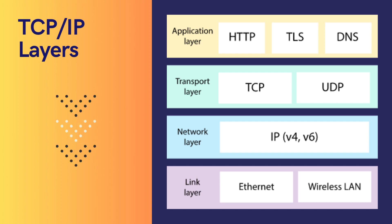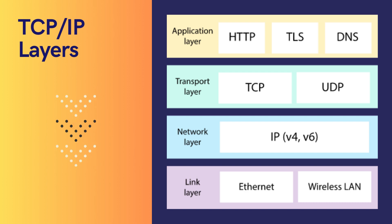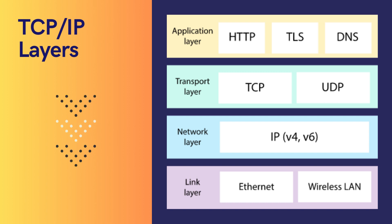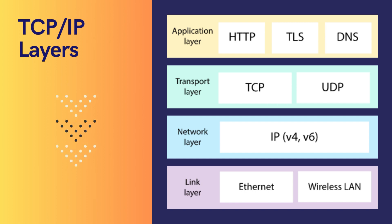You need to remember the order because some previous exam papers have asked for the correct order. Each layer supports different protocols or standards. The application layer supports protocols such as HTTP, DNS (Domain Name Server), FTP, etc. The transport layer supports both TCP and UDP — UDP, or User Datagram Protocol, is used for time-sensitive transmissions such as DNS lookups, online gaming, and video streaming. The network layer supports IPv4 and IPv6, and the link layer supports Ethernet and wireless LAN topologies.